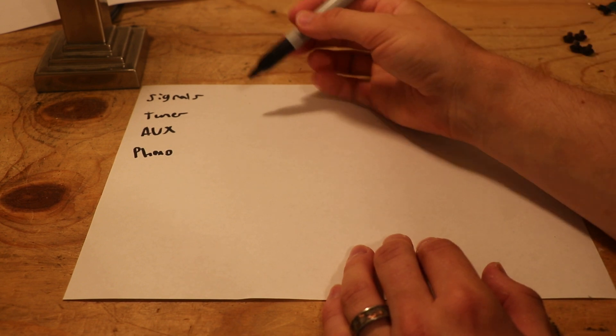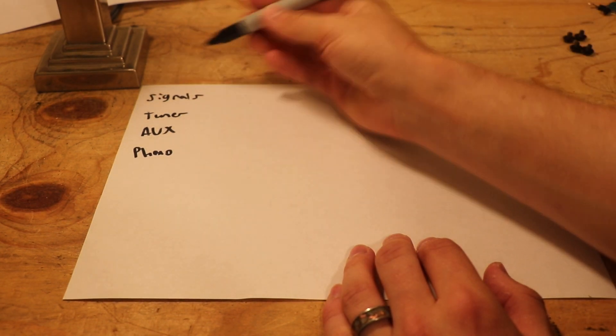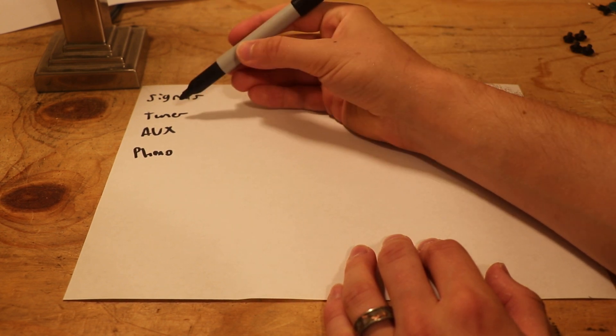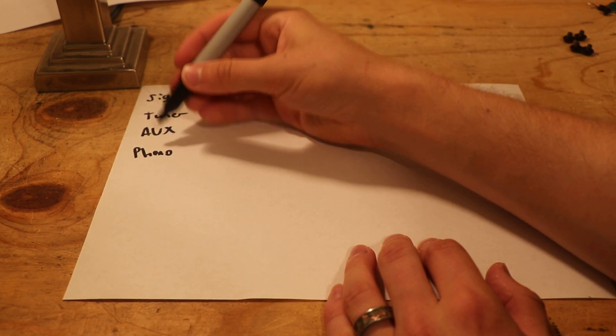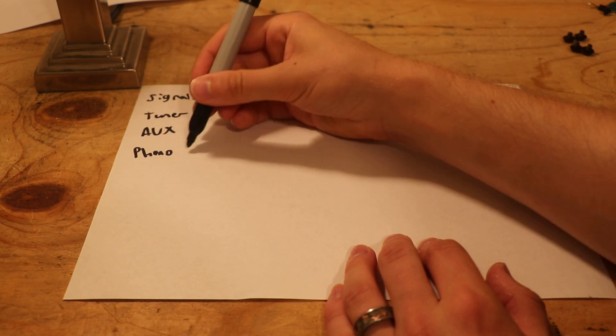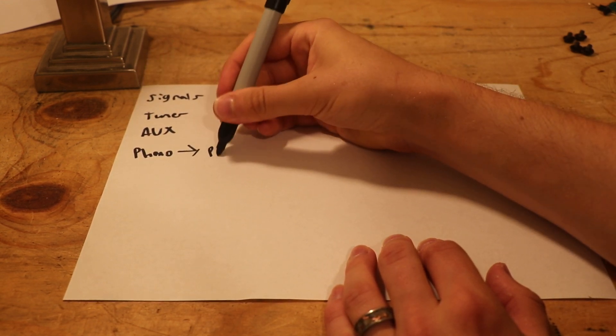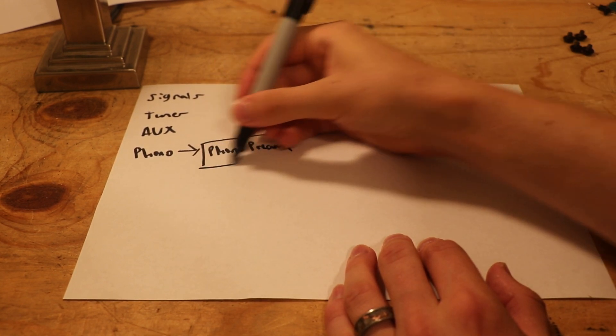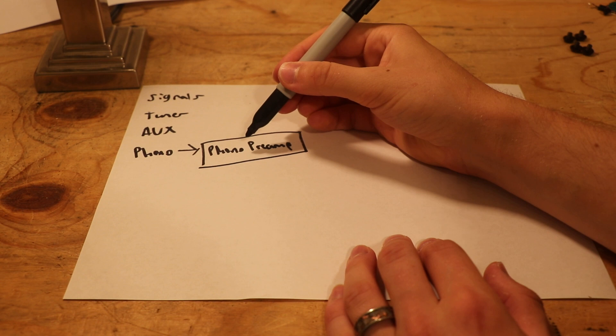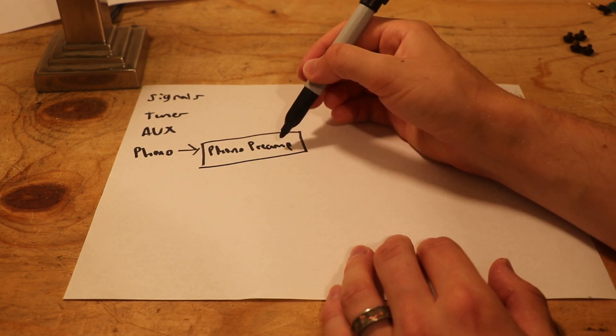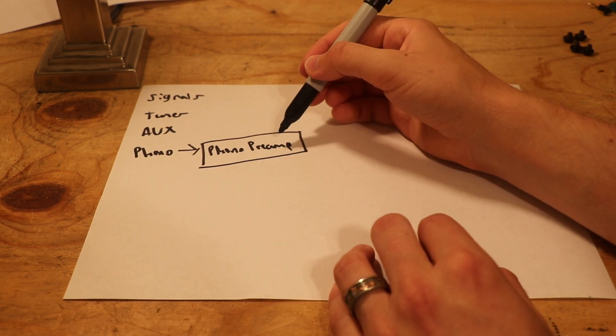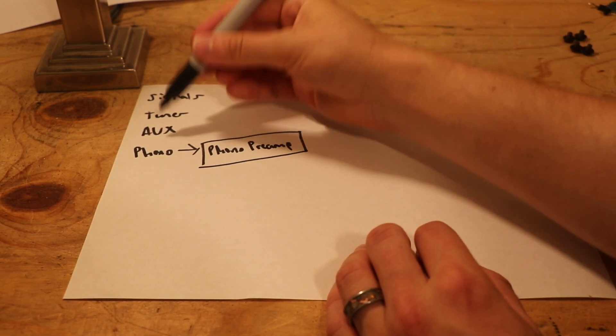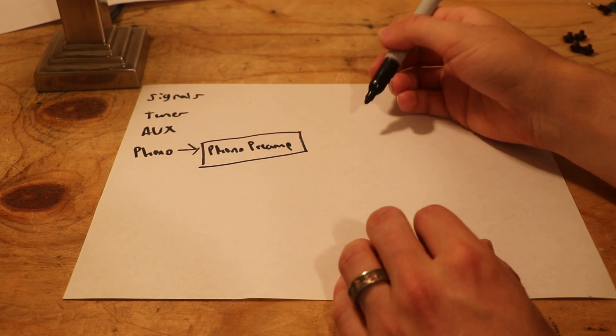Let's start with the phono because this one is unique to all of the other inputs on the receiver. The phono signal is coming right off of your record player. Where this is going is a phono preamp. This exists on the receiver on one circuit board, and it's taking the very small signal from the cartridge on your record player and making it bigger, making it very similar to what you'd find coming out of here.